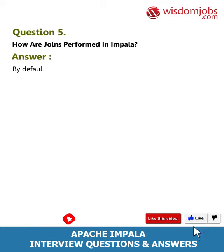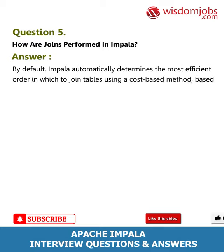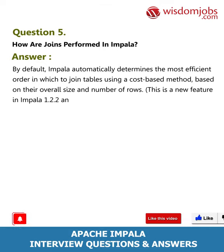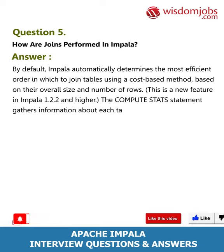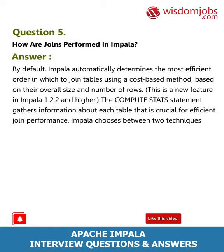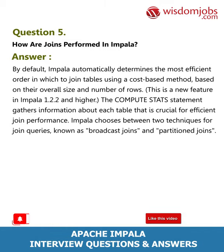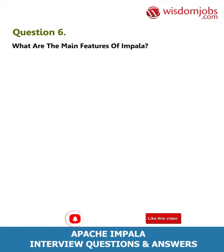Question 5: How are joins performed in Impala? By default, Impala automatically determines the most efficient order in which to join tables using a cost-based method based on their overall size and number of rows. This is a new feature in Impala 1.2.2 and higher. The compute stats statement gathers information about each table that is crucial for efficient join performance. Impala chooses between two techniques: broadcast joins and partition joins.